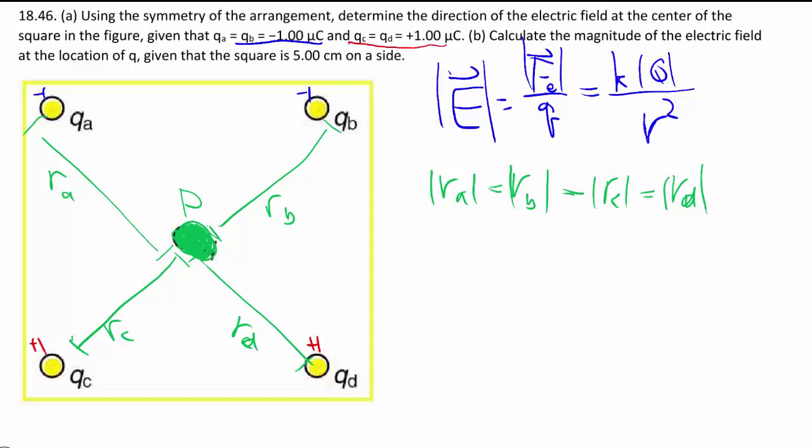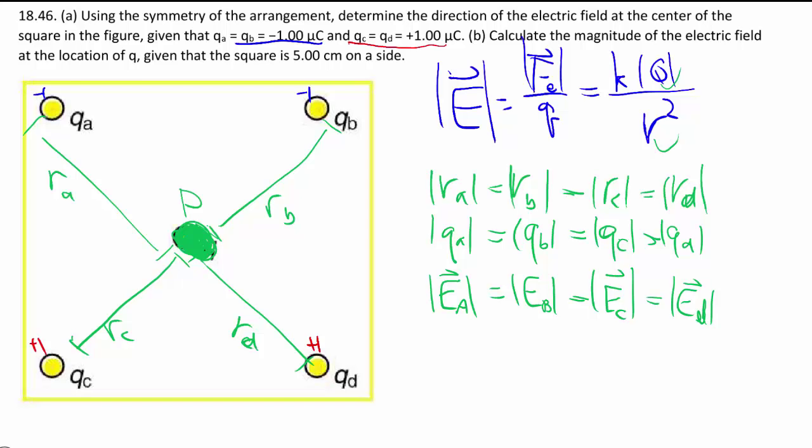On top of that, we also can see from the four charges that the magnitude of Qa equals the magnitude of Qb, equals the magnitude of Qc, equals the magnitude of Qd. So that's where all the symmetry comes in. Having the same R and the same Q, and then the same constant, means that Ea, Eb, Ec, Ed they must all have the same magnitude as well.